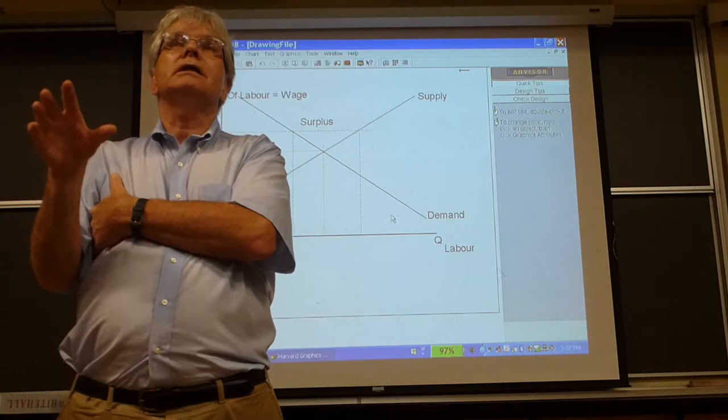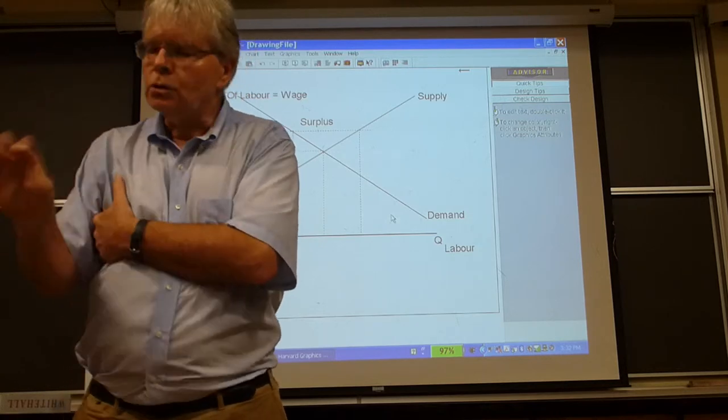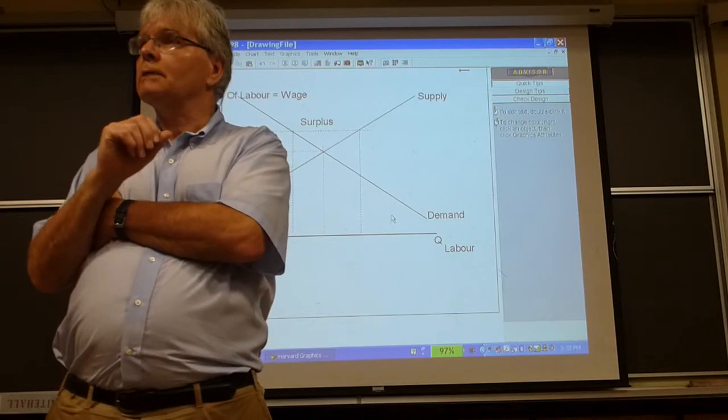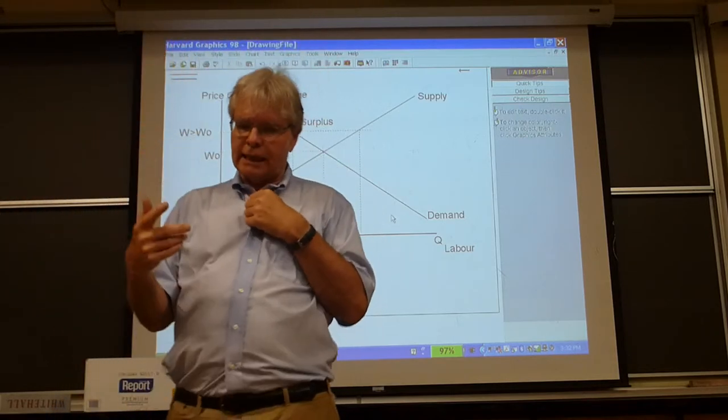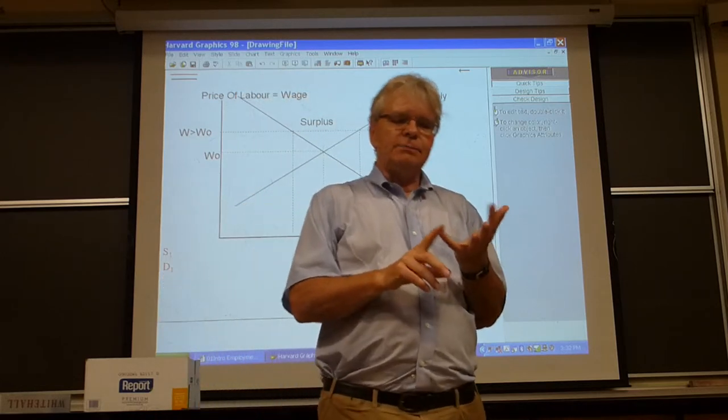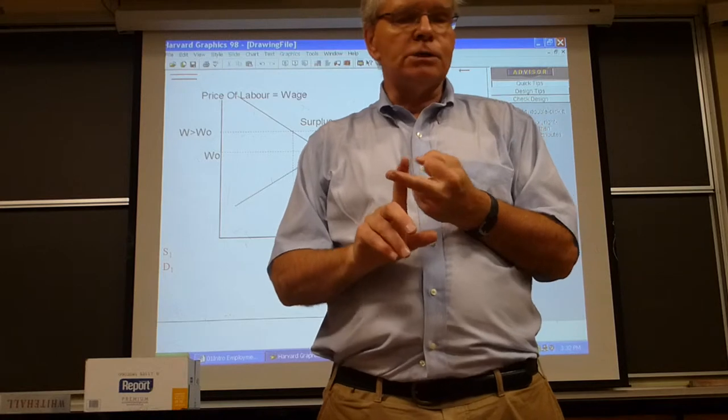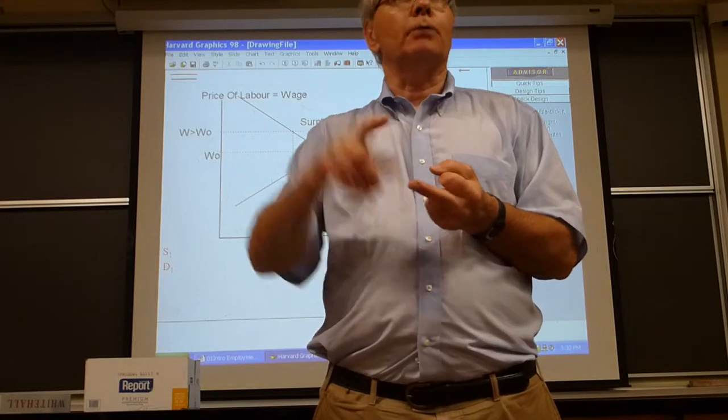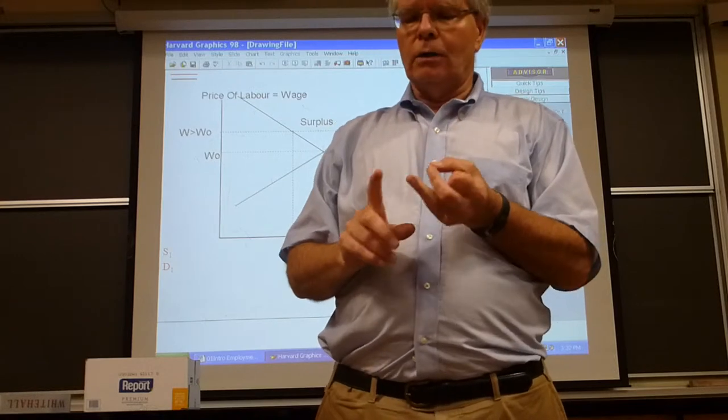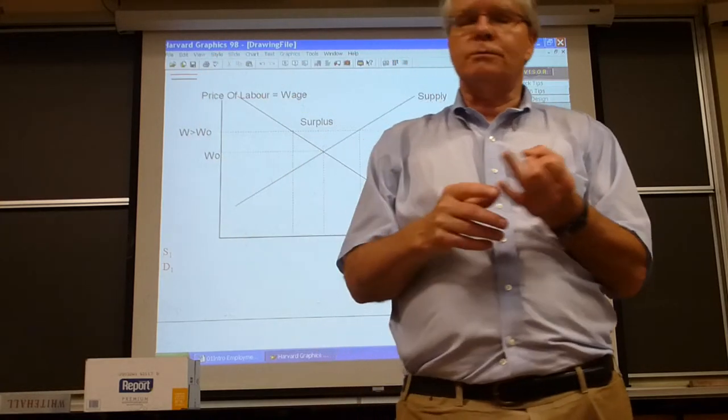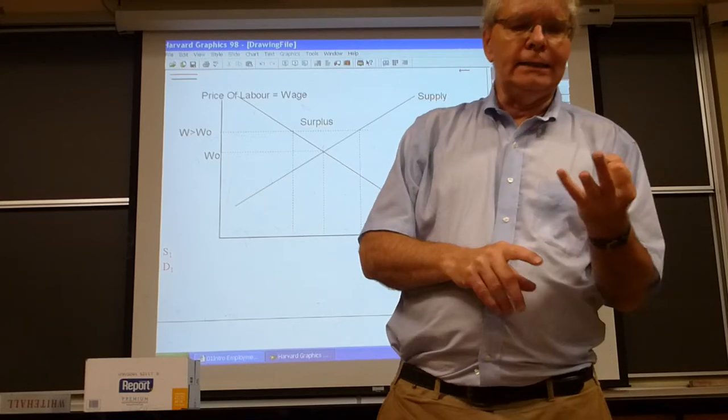What that means is simply this: the government will intervene in the economy to make sure there's full employment. That's what Keynes is all about. And the government intervenes basically in potentially three ways. The way that Keynes most talked about was changing interest rates. The way that people think Keynes talked about was government spending, and cutting taxes. Those are the three ways.